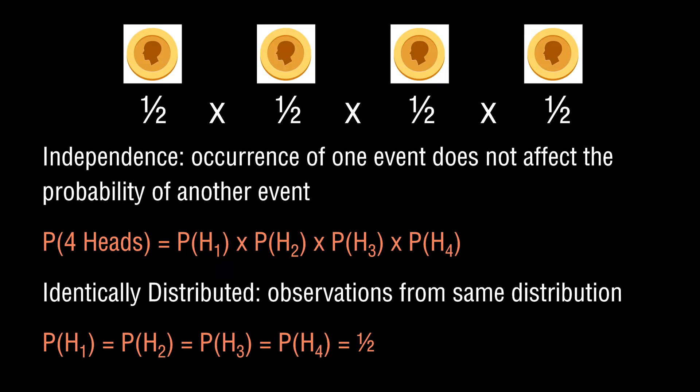That probability is just equal to one half. Because you assumed independence — which says the probability of getting four heads in a row equals the product of each individual probability — and you assumed each is one half, the probability of getting four heads is simply one half raised to the fourth power.